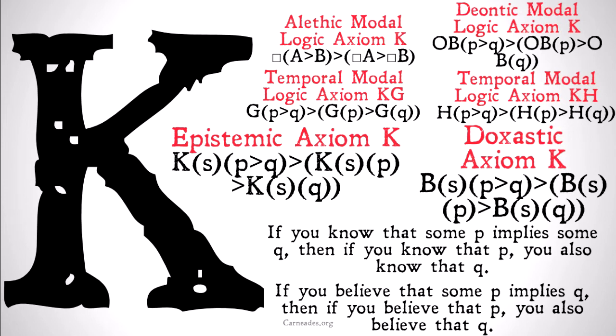Basically, if you know that some P implies some Q, then if you know that P you also know that Q. Or if you believe that some P implies Q, then if you believe that P you also believe that Q.